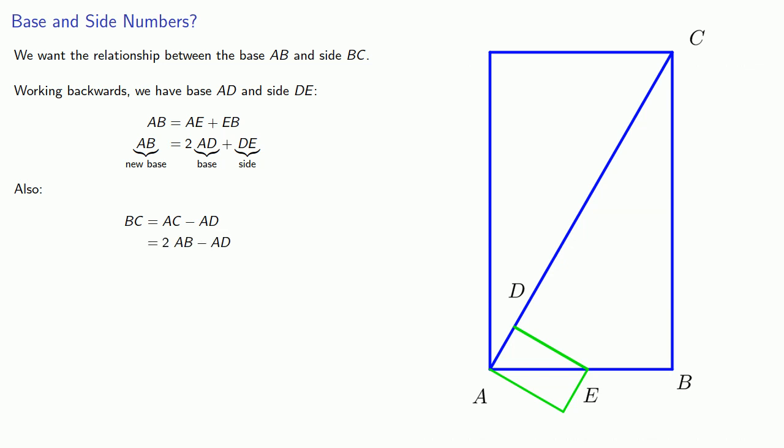And we have an expression for AB. It's 2AD + DE. And so 2AB is going to be 4AD + 2DE, from which we'll subtract AD. And that tells us that the new side is 3 times the base plus 2 times the side.